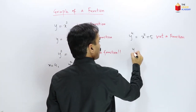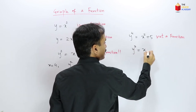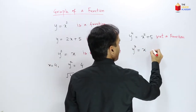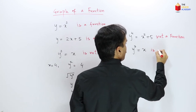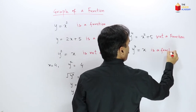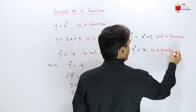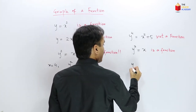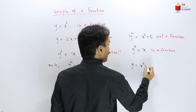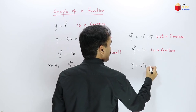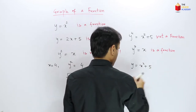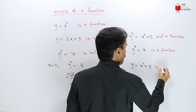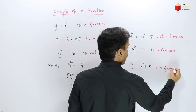But if there is an odd power, for example y³ = x, then it is a function because the power is odd — it is a function. Similarly, y = x² + 5, this is a function, and here y is a function of x.